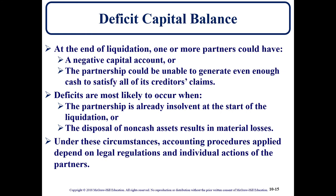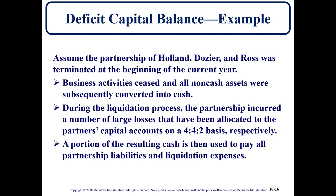What happens if a partner has a deficit balance in their capital account? They are required to pay the partnership to eliminate that deficit — at minimum bringing their capital account to zero. If they are unable to pay because they are insolvent, have declared bankruptcy, or have left, then the other existing partners will have to cover that deficit. Once that loss is assessed, we can distribute any remaining cash to the existing partners. We have an example with three partners: Holland at 40%, Dozier at 40%, and Ross at 20%.